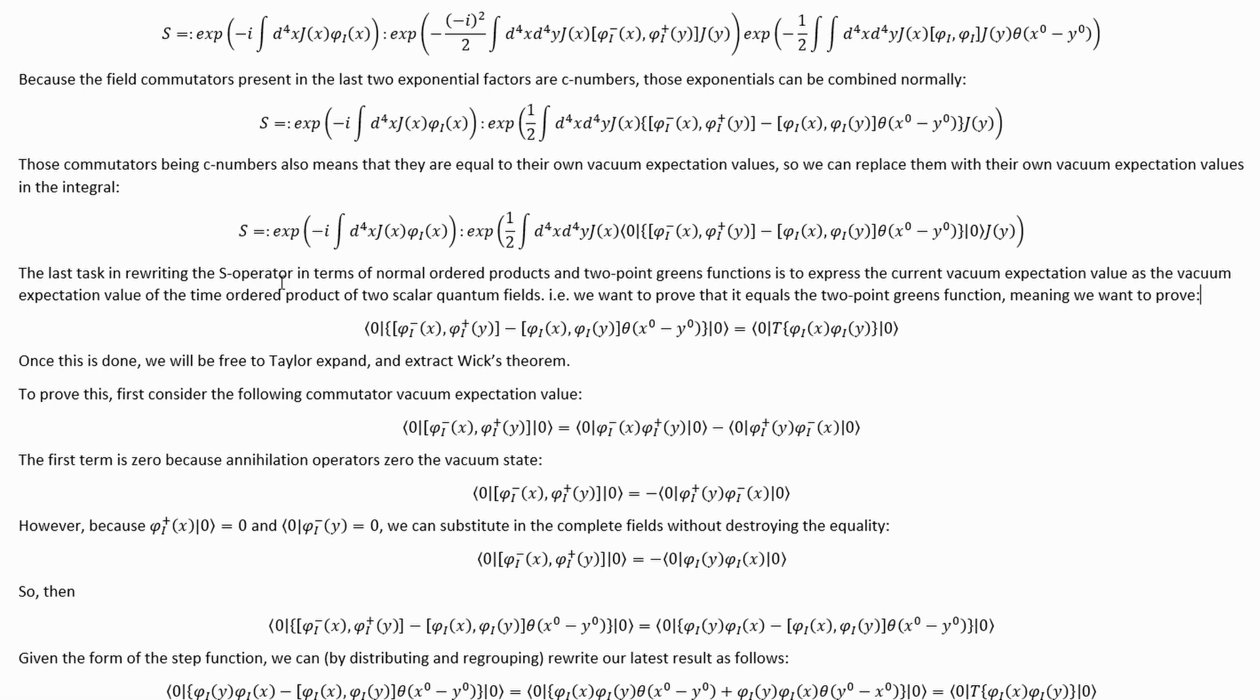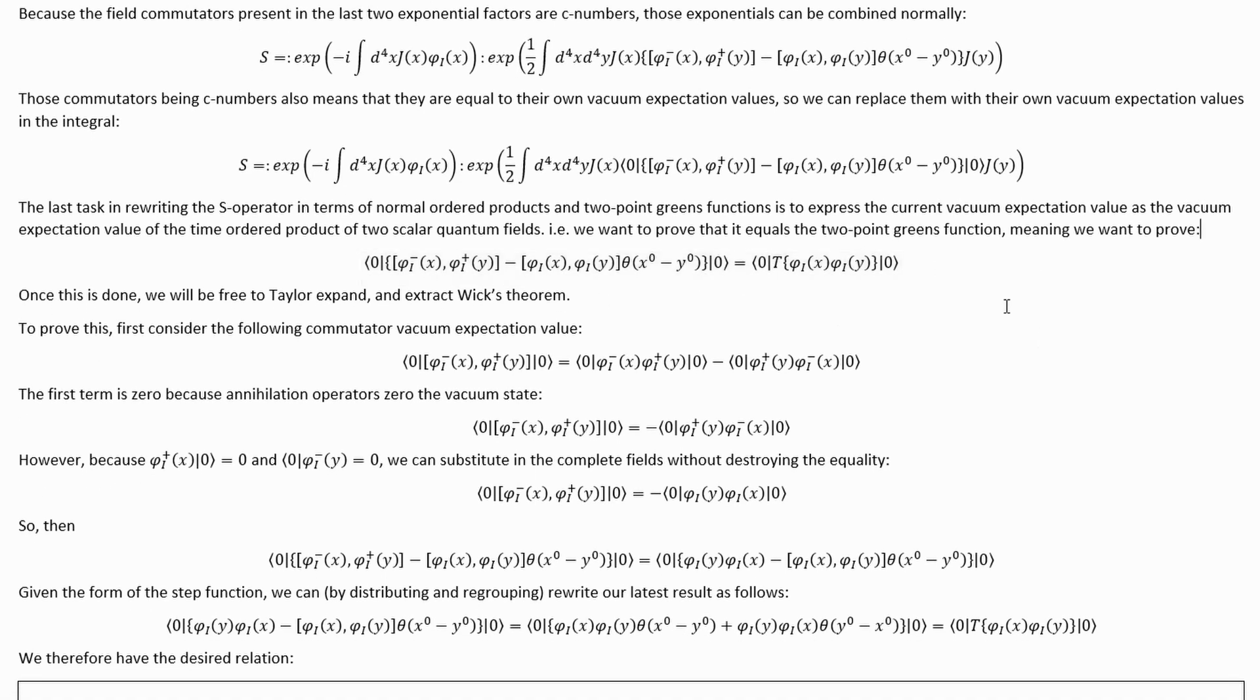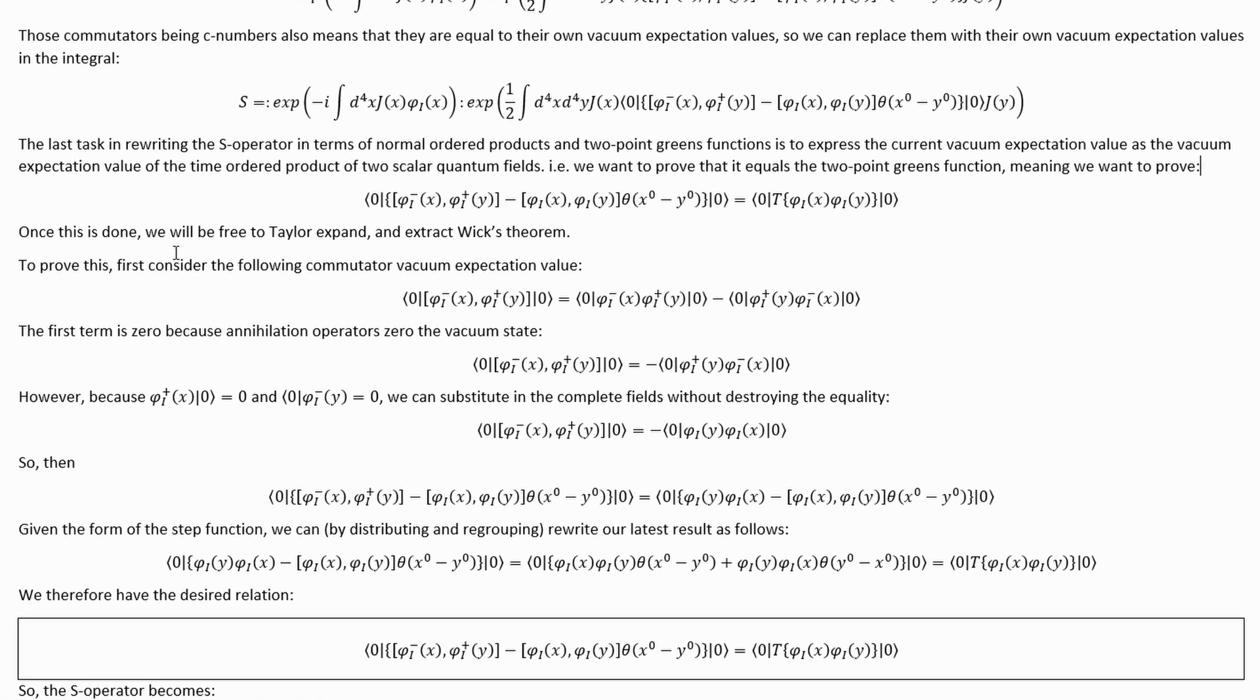The last task in rewriting the S operator in terms of normal ordered products and two-point grains functions is to re-express the current vacuum expectation value as the vacuum expectation value of the time ordered product of two scalar quantum fields, i.e. we want to prove that it is equal to the two-point greens function, meaning we want to prove this relationship here. Once this is done, we will be free to Taylor expand and extract Wicks theorem.